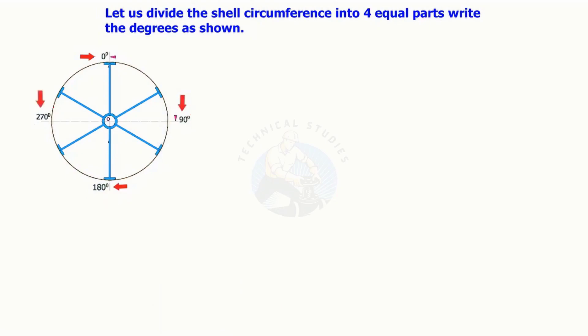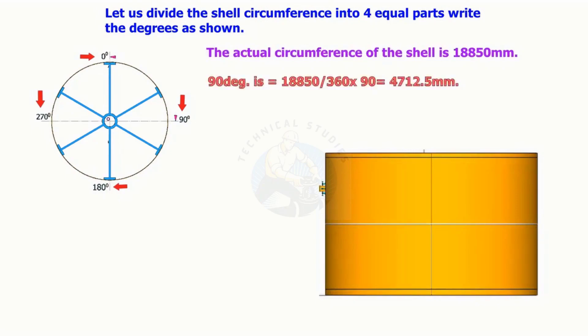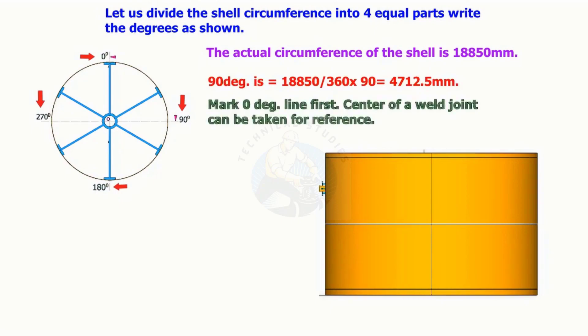Actual circumference of the shell is 18,850 millimeters. 90 degrees is equal to 18,850 divided by 360 times 90, equals 4,712.5 millimeters. First, mark the zero degree line. Center of a long seam shall be used for reference.